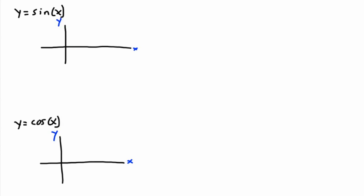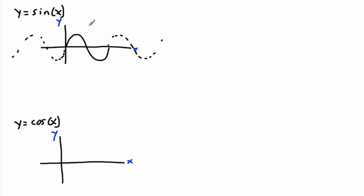Sine x starts off at (0, 0) — at x equals zero, y is zero. It goes up, goes back down, and goes like this. This is what we call one period. Of course it keeps going forever in both directions, but I'm showing you one period. Remember, a period is the distance in the x-direction where you've completed the entire cycle.